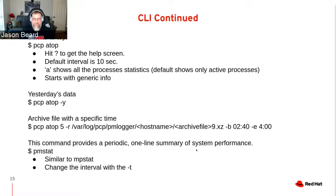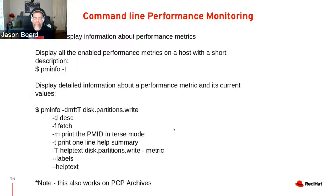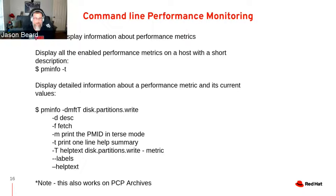PM stat is similar to mpstat. Like a lot of the commands, -T is interval. PM info, if you just run it by itself, will tell you all the metrics that are available on a particular host. The -T flag gives you a short description of each metric and what it is. -F will pull the current value for that metric. This command also works on archive files — that's one of the big things in Performance Copilot, being able to get data out of archive files.